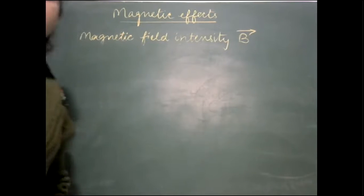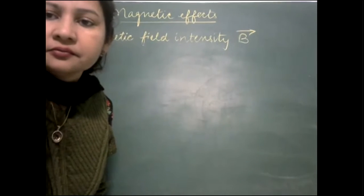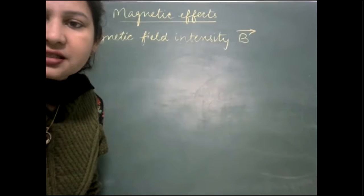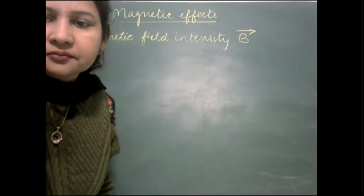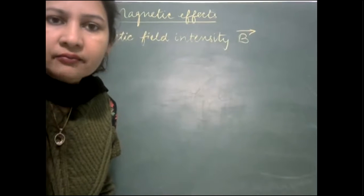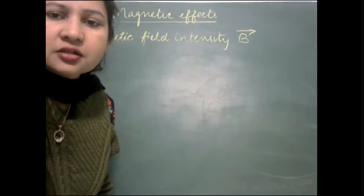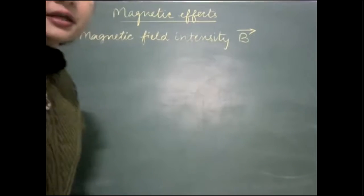The SI unit of magnetic field intensity is Tesla and the CGS unit is Gauss. 1 Tesla is equal to 10 raised to the power 4 Gauss. This is the relationship between the two units.